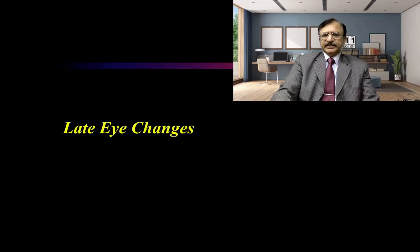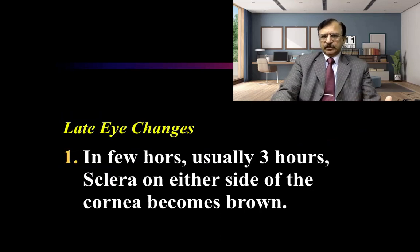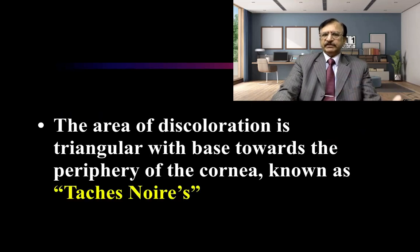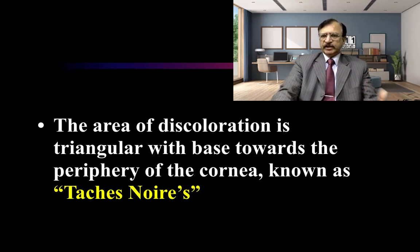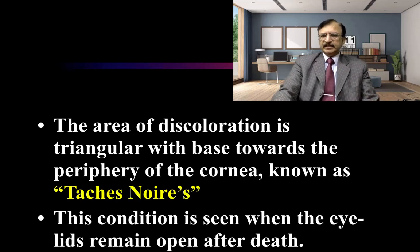Regarding the later changes of the eye: within a few hours, usually three areas of the sclera on either side of the cornea become brown. This brownish discoloration is due to the deposition of cellular debris and dust, and it appears triangular in shape with the base towards the periphery of the cornea. These are called tache noire, seen when the eyelids remain open after death.